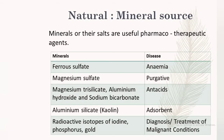Mineral sources and their salts are useful pharmacotherapeutic agents. Ferrous sulfate is used in iron deficiency anemia. Magnesium sulfate is used as a purgative. Magnesium trisilicate, aluminium hydroxide, and sodium bicarbonate are used as antacids to decrease gastric acidity. Aluminium silicate, also known as kaolin, is an adsorbent used as an antidote for toxins in the body. Some radioactive isotopes of iron, phosphorus, and gold are used for diagnosis and treatment, such as in radiotherapy.